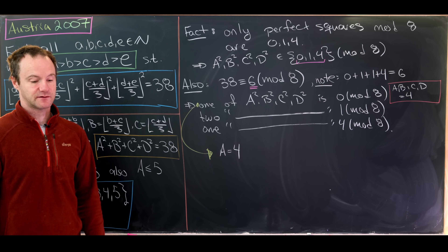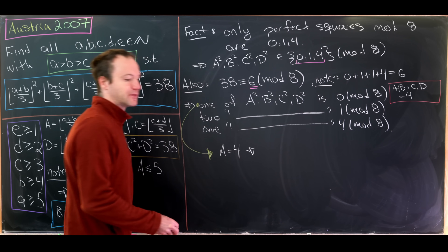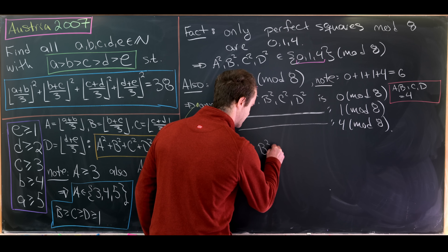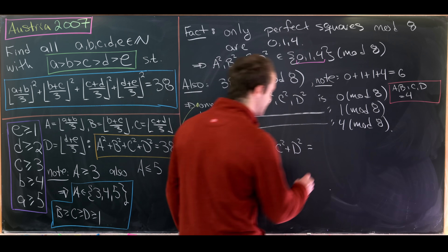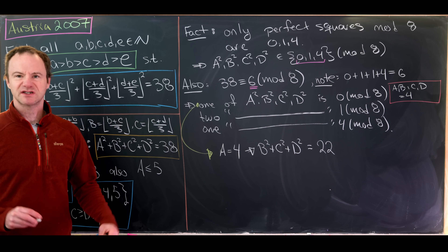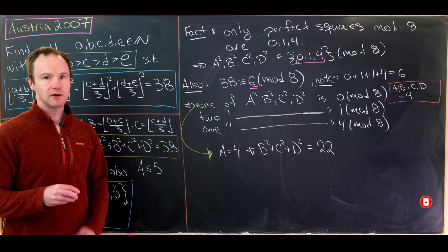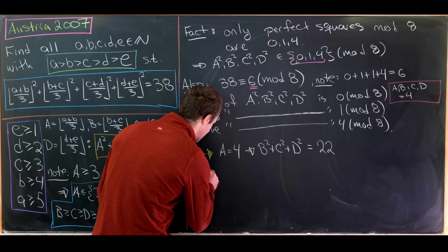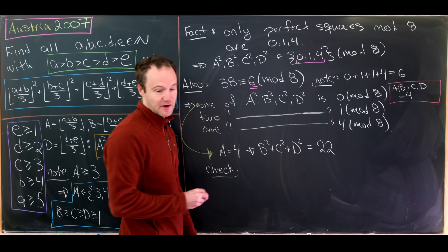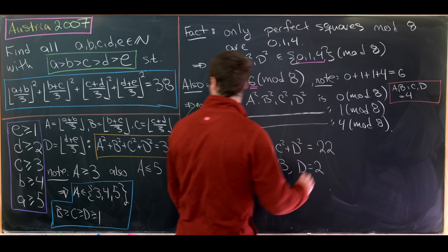Plugging capital A = 4 into our equation gives B² + C² + D² = 38 - 16 = 22. By exhaustion, checking all perfect squares smaller than 22, the only way to sum three of them in non-decreasing order to reach 22 is B = C = 3 and D = 2.